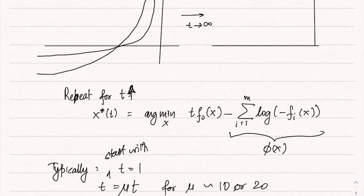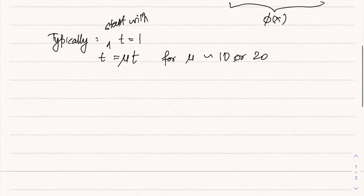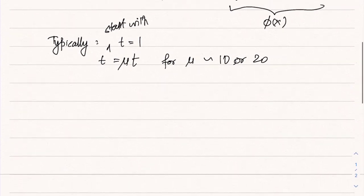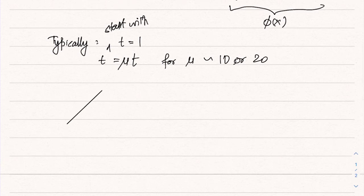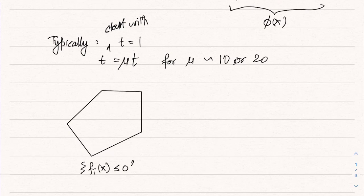What do the iterations look like if we look at it in terms of contour plots? Let's say this boundary denotes our constraint region, so we are allowed to be inside this. Let's say that this is the set of all x such that fi of x less than or equal to zero, and let's say that our objective is minimized here—this is x star.